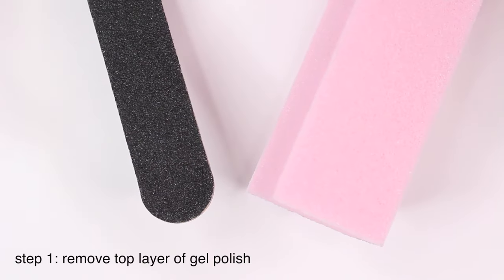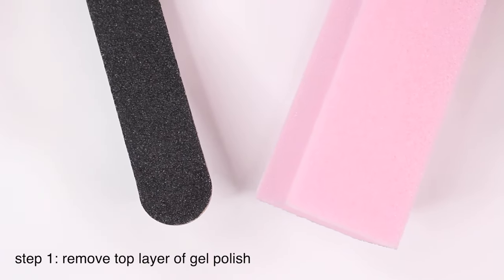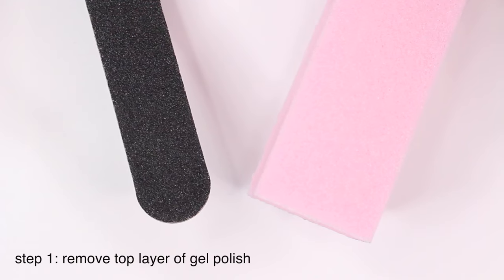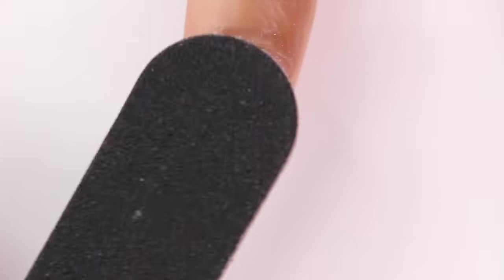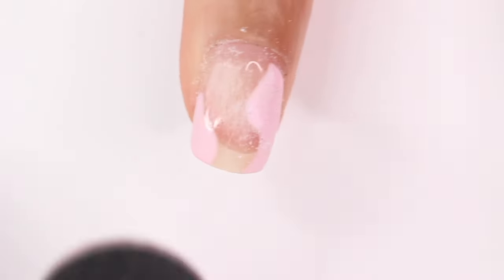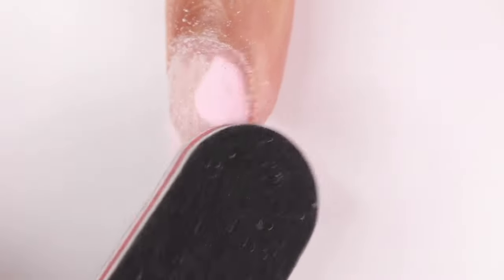For all of these methods, the first thing that you need to do is remove that top layer. So this is the top coat, whether it's matte or glossy, you need to remove it completely. And this is going to let the acetone actually soak off the gel polish. So you do have a few options for this. You can use a nail file like I'm doing right here, you can use a buffing block with some grit to it, or you could use an e-file.